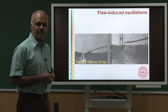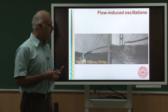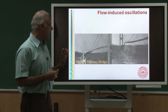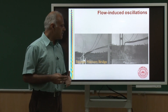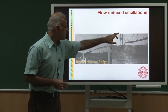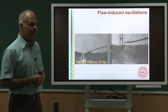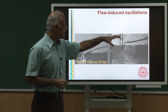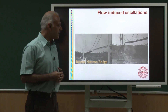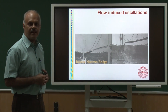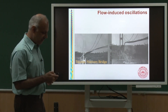Another example of flow-induced oscillations is electricity cables. Cables that carry electricity over long distances have a catenary structure, and when wind blows past them, you can get unsteady flow causing them to oscillate and potentially fail as well.